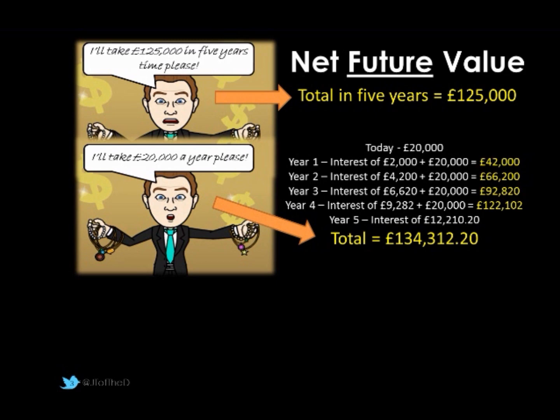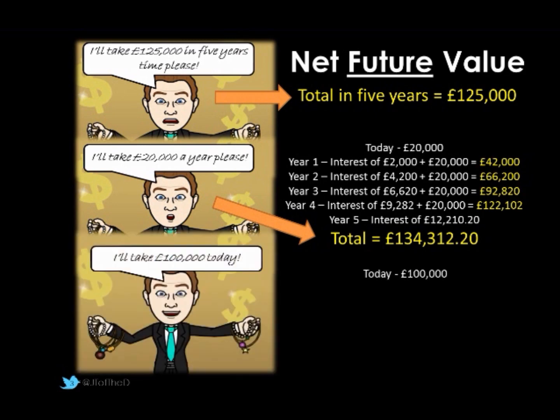That's why option B is a better financial option than option C — the £125,000 in five years' time. Even though option C is £25,000 larger as a return, we haven't taken into account that we could have put this money in the bank and earned on it. The best option is actually option A — taking £100,000 today. It's one lump sum, we don't get any further instalments, but our interest straight from the start is much higher.